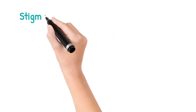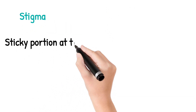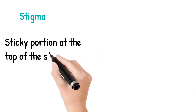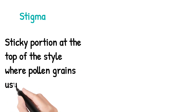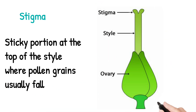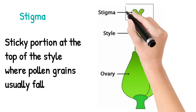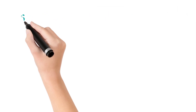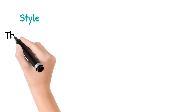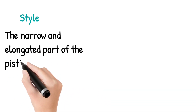Next we move on to the stigma. The stigma is the sticky portion at the top of the style, where pollen usually lands. You can see the picture — the upper part of the pistil is called the stigma.